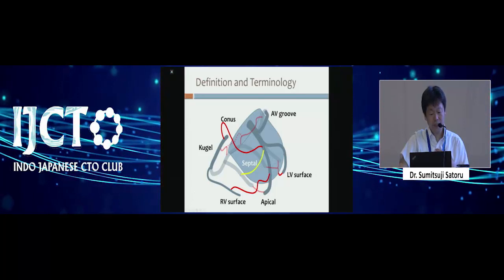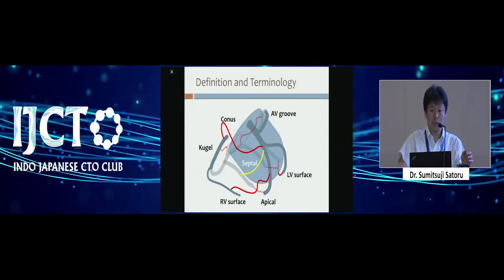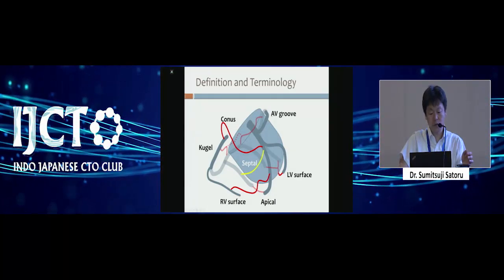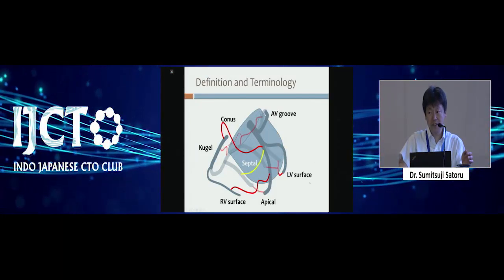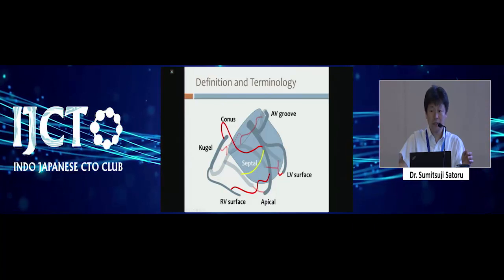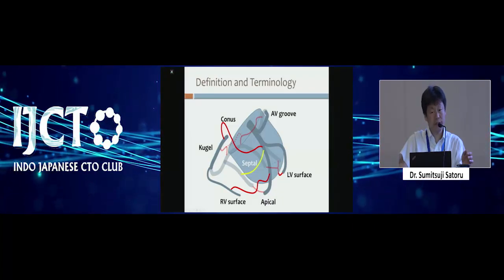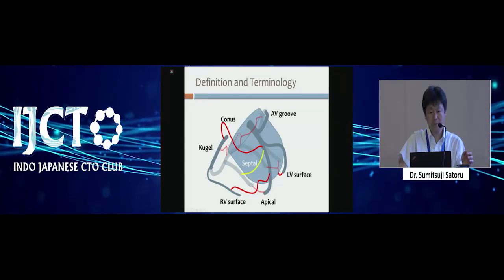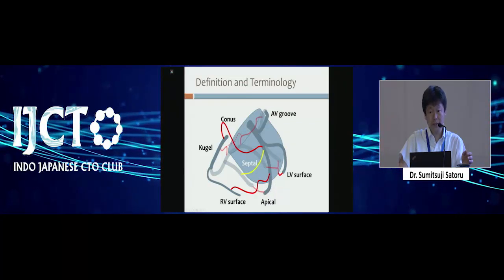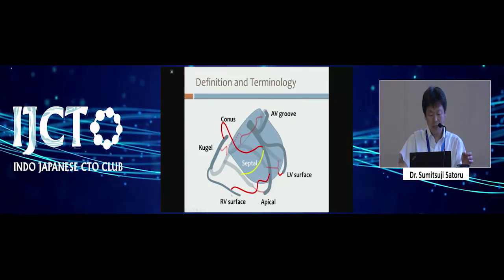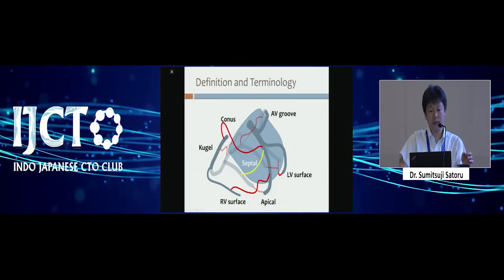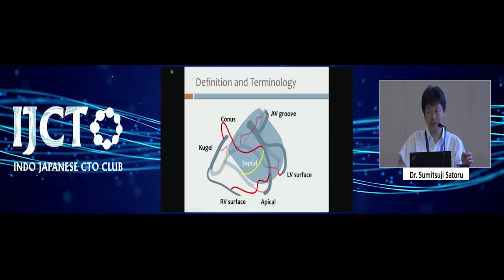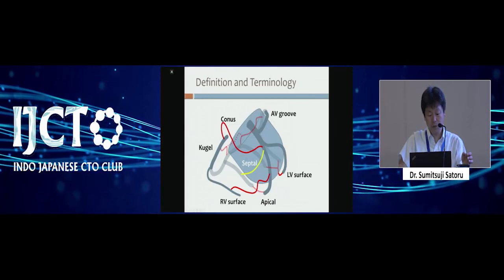Of course, the septal channel. But we can have more possibilities of doing the retrograde with many types — AV group, so-called AC channel as well. And the LV surface from the diagonal to the OM, poster lateral, circumflex poster lateral, and also the right coronary poster lateral. And the apical — apical mainly connects the distal LAD to the distal PDA. And the right ventricle surface, RV branch to the LAD, and a conus branch. Conus branch is not so frequently used, but rarely sometimes works for the retrograde.